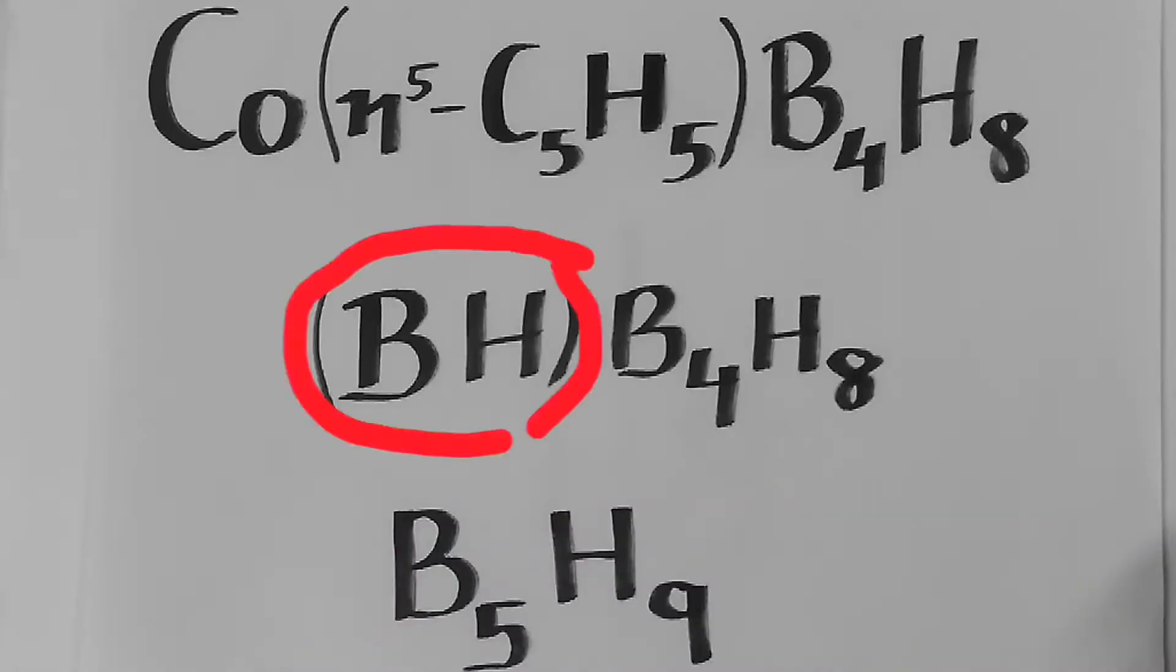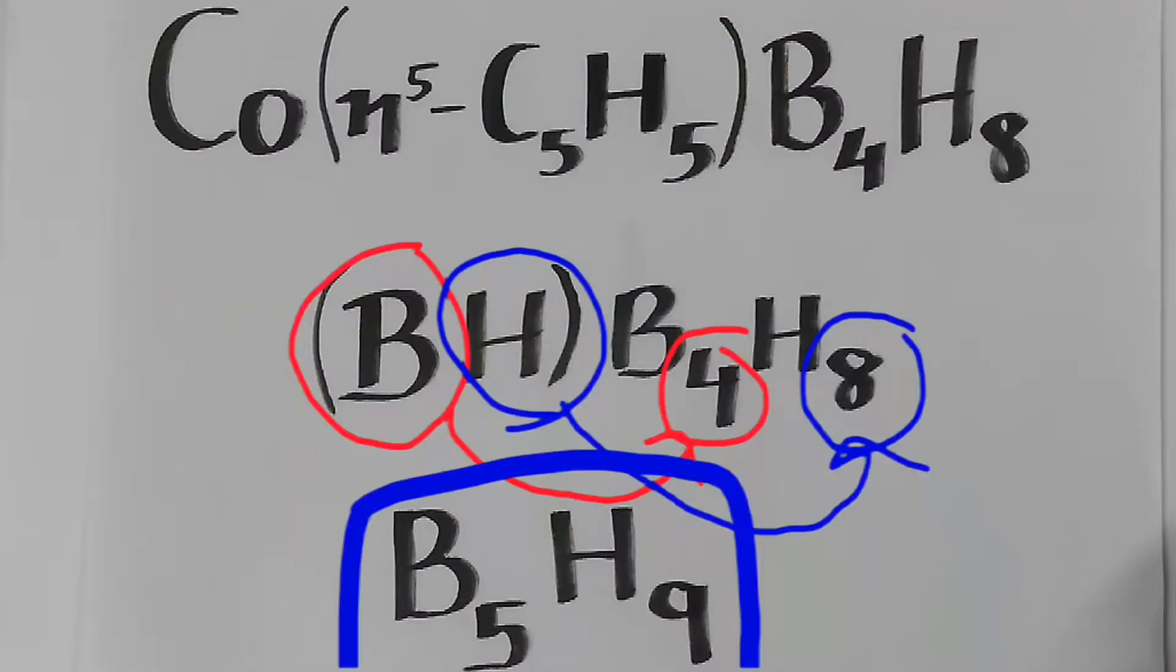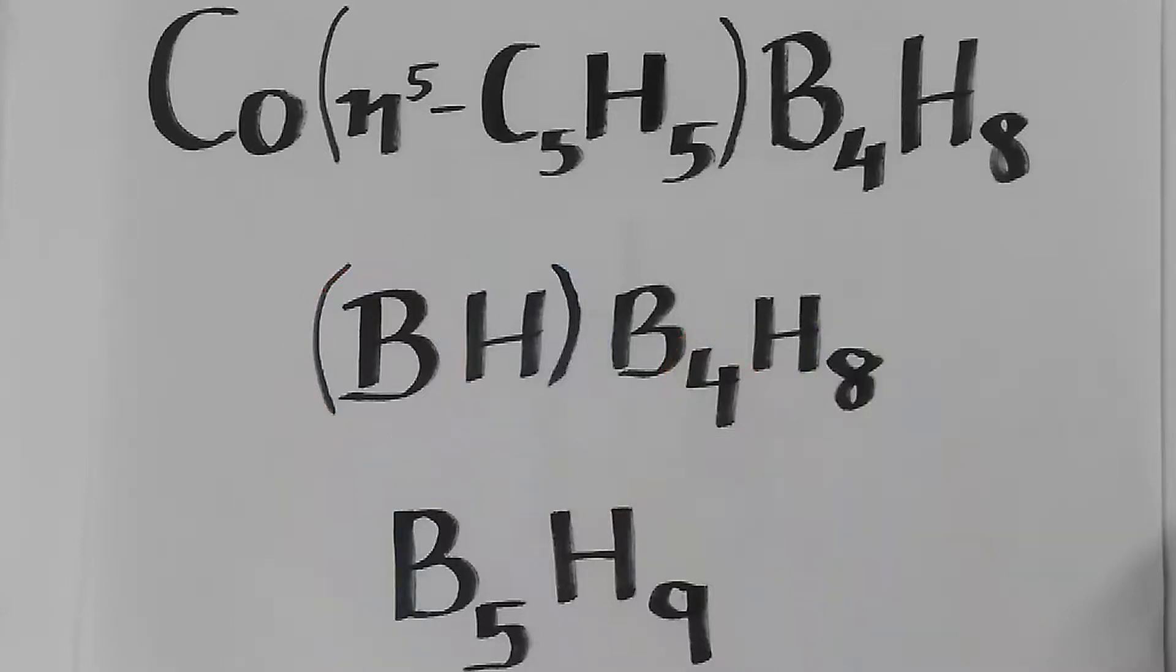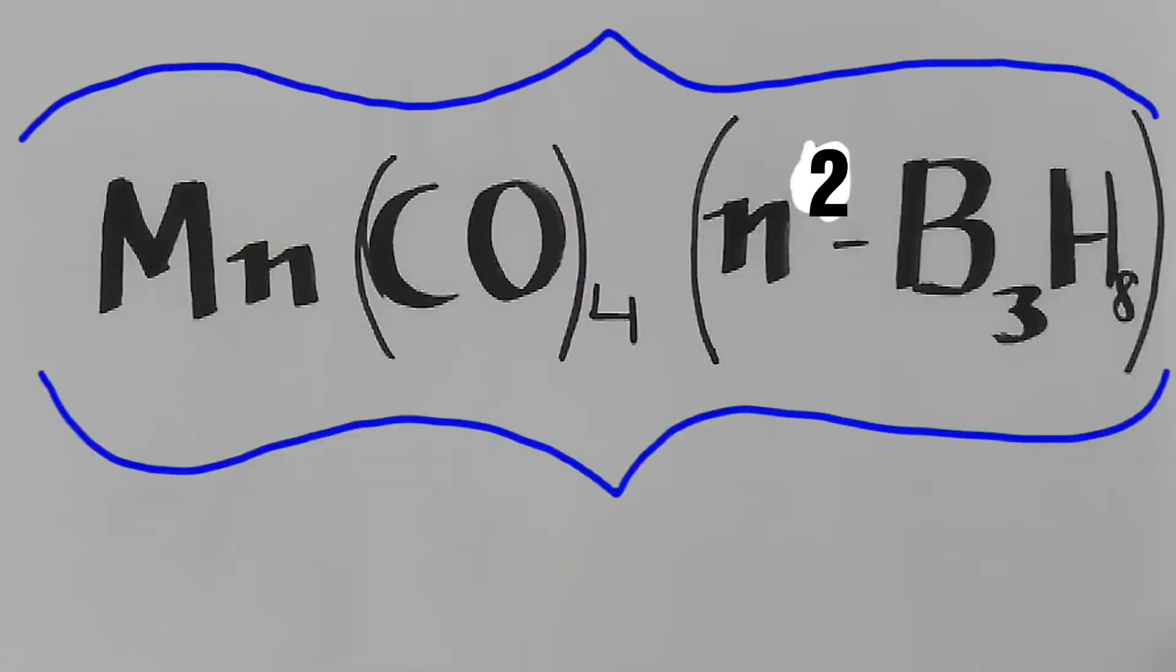After replacing BH for this complex and simplifying we get B₅H₉ and the structure is NIDO.